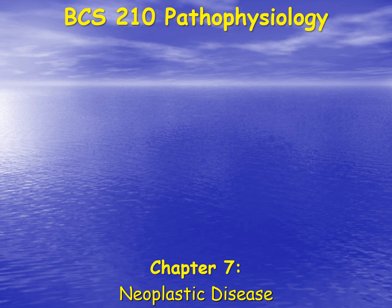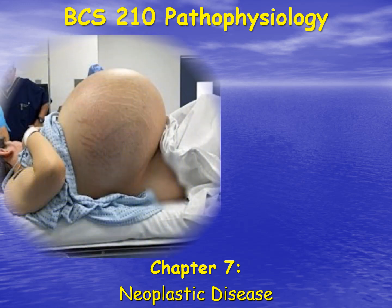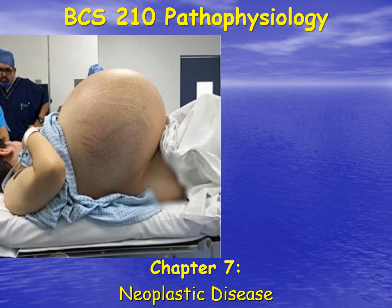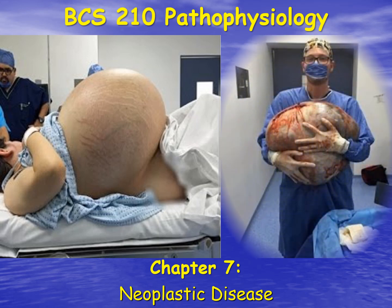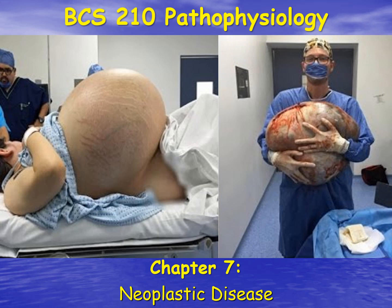Chapter 7: Neoplastic Disease. In this chapter, we are going to discuss cancer. In this picture, you can see a patient that looks like she's about 38 months pregnant, but actually she has an ovarian cyst. This was the tumor after it was removed.